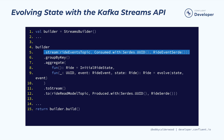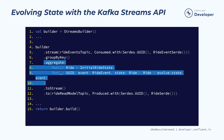The application then responds to the command web service request with a success message. Our next touchpoint between the core domain and our streaming data platform application is implementing our state view slices using the Kafka Streams API and our evolve function. For example, here we have a snippet representing evolving our ride read model based on events arriving on the ride stream. First, we configure Kafka Streams to read and deserialize from our ride event stream input topic. We then build a simple Kafka Streams topology where we use the KStreams groupByKey on our ride ID and KStreams aggregate methods to adapt our evolve function.